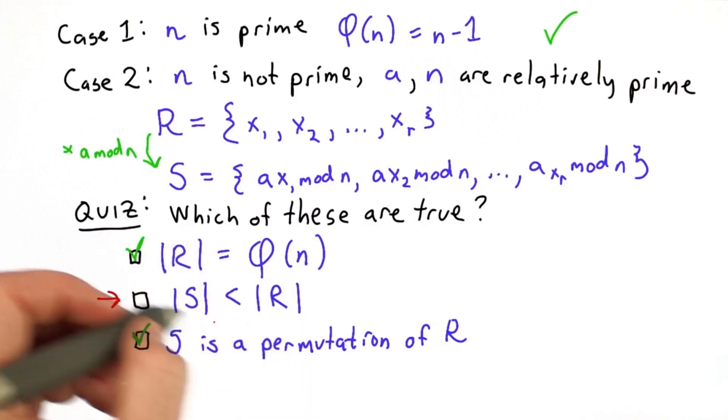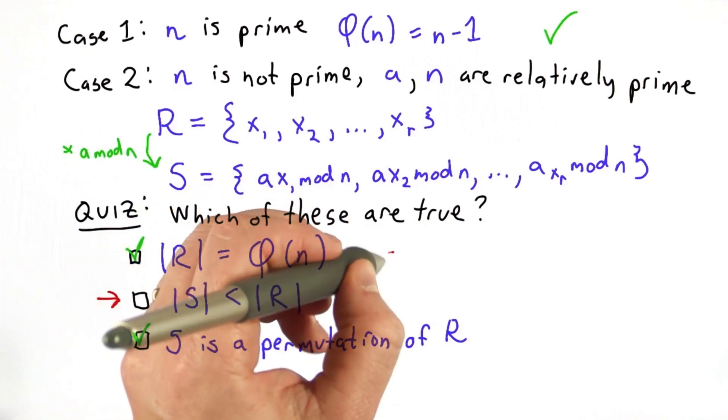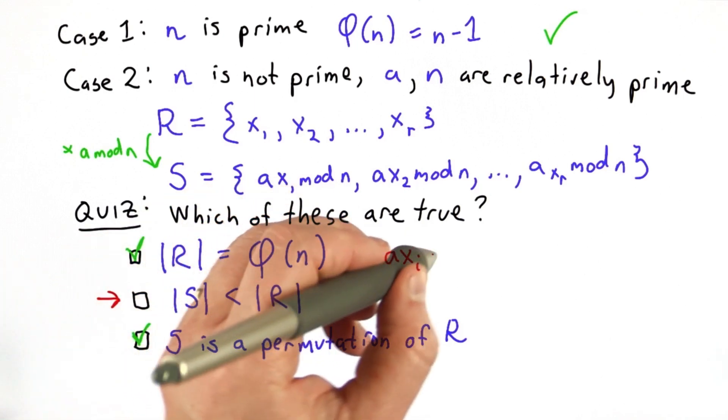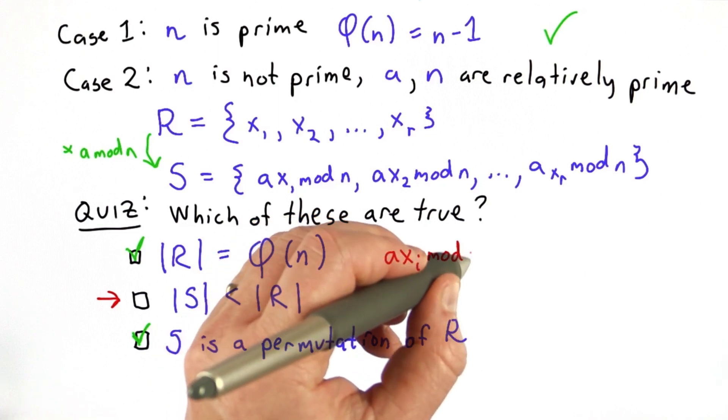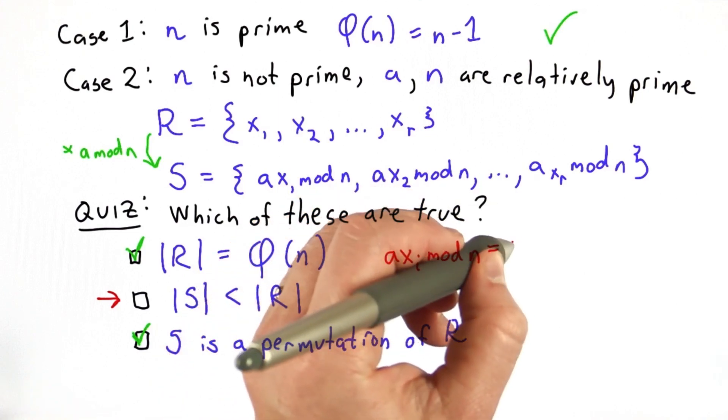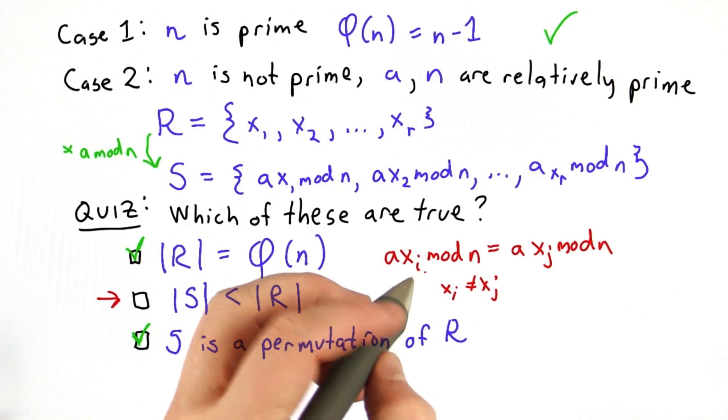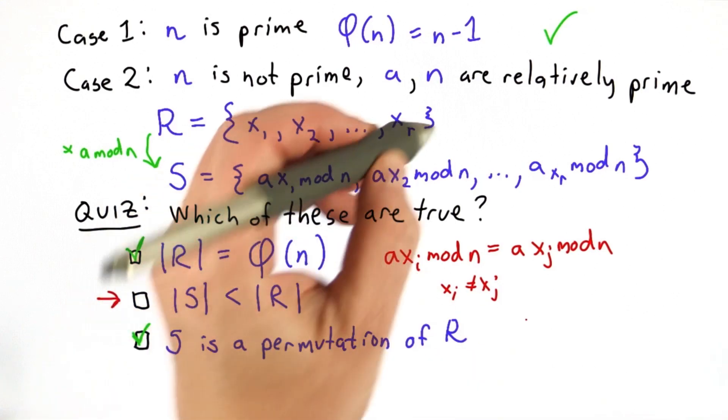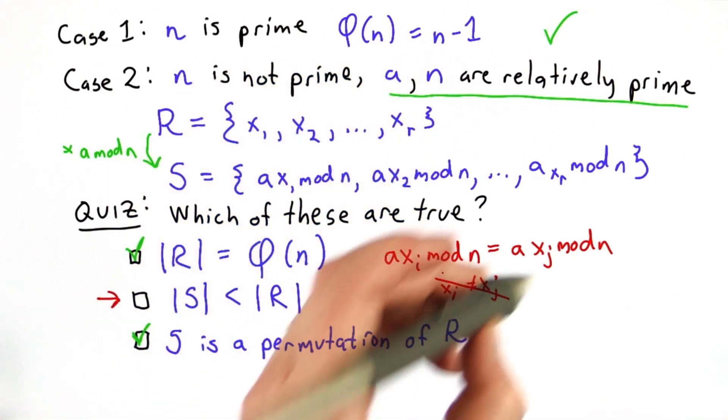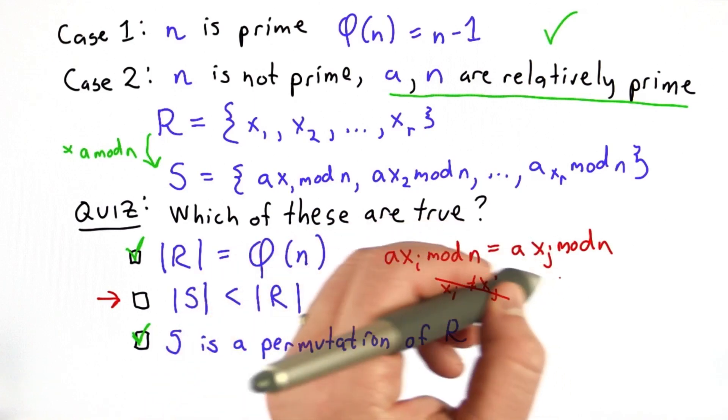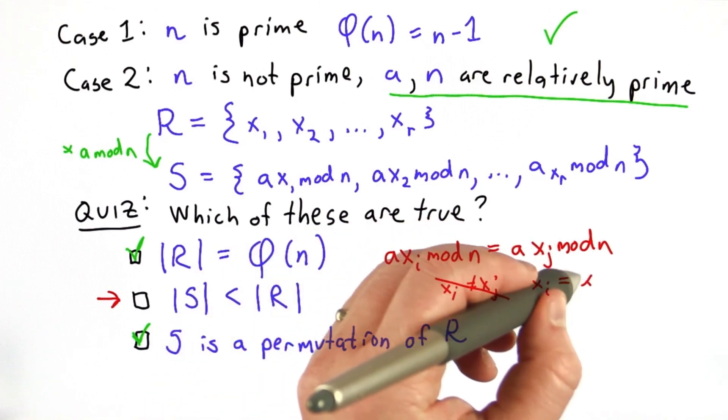The second one is not true. In order for this not to be true, it would mean that there's some element where axi mod n is equal to axj mod n. But that's not the case because a and n are relatively prime. So we know that these values must all be different. The only way these could be equal is if xi is equal to xj.